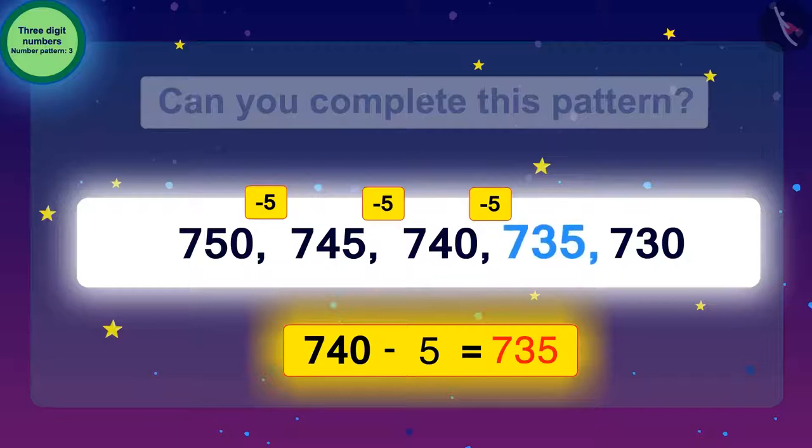Look carefully. If we subtract 5 from 735, we get 730, which is already given.